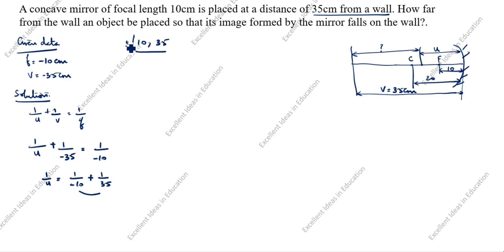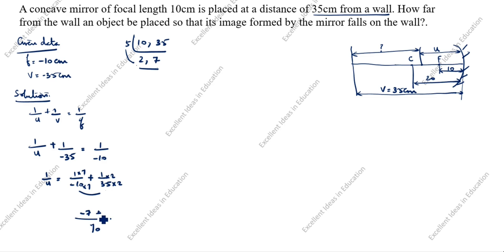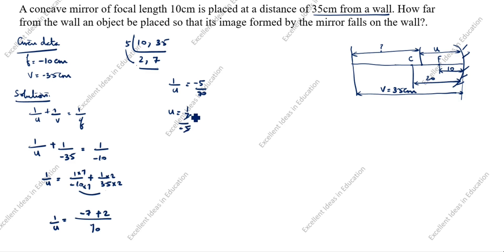We take the LCM of 10 and 35. 5 goes into 10 twice, and 5 goes into 35 seven times, so LCM is 70. So 1/u equals minus 7 over 70 plus 2 over 70, which equals minus 5 over 70. Therefore u equals 70 over minus 5, and cancelling gives u equal to minus 14 centimeter.